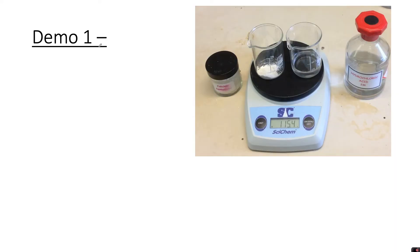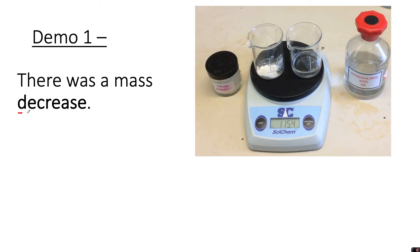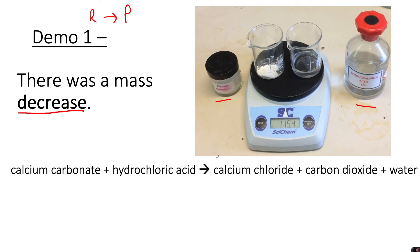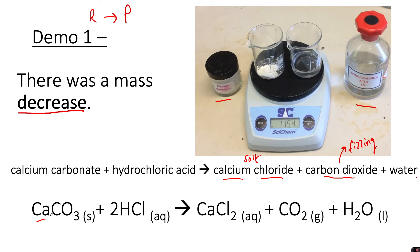Let's go through each demonstration. Demo 1 showed a mass decrease, which is unusual because conservation of mass says the mass of reactants must equal the mass of products. The reactants were calcium carbonate and hydrochloric acid. The word equation is: calcium carbonate plus hydrochloric acid makes calcium chloride plus carbon dioxide plus water. You may have noticed it started to fizz — that's the carbon dioxide being produced.